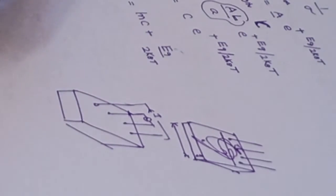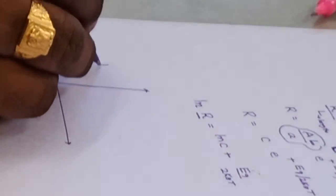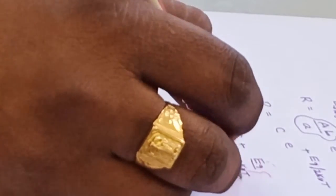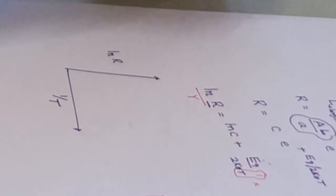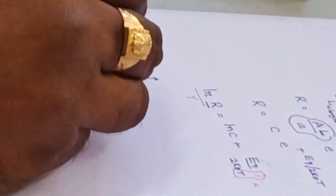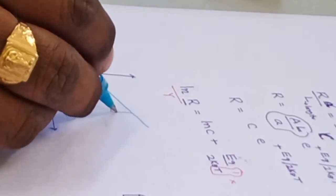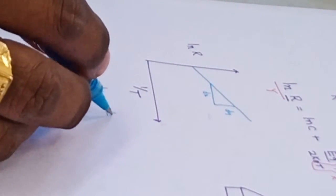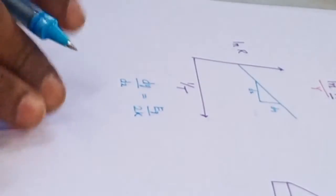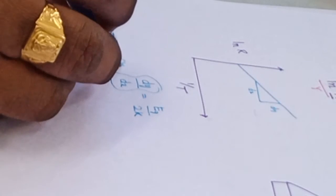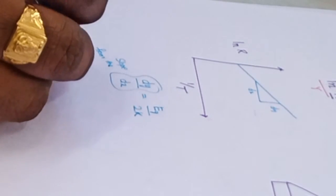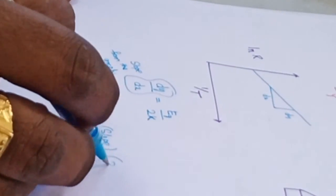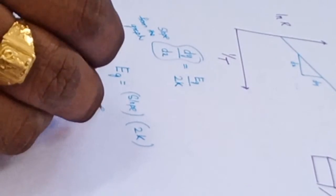If you plot the graph of ln(R) versus 1/T, with 1/T on the x-axis and ln(R) on the y-axis, you obtain a straight line. Taking the slope dy/dx of this line gives Eg/(2KB), where KB is the Boltzmann constant. Therefore, Eg = slope × 2KB. This slope-derived value gives the energy gap of the semiconductor material.